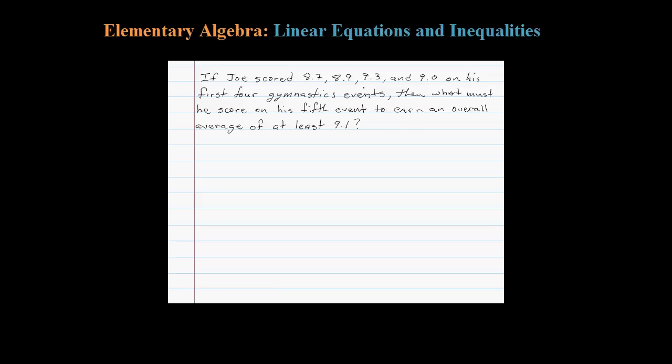Here, Joe earned four scores, and then it says what must you score on the fifth event to earn an overall average of at least 9.1? Okay, so let's identify our variables. Let's let X equal the score on the fifth event.